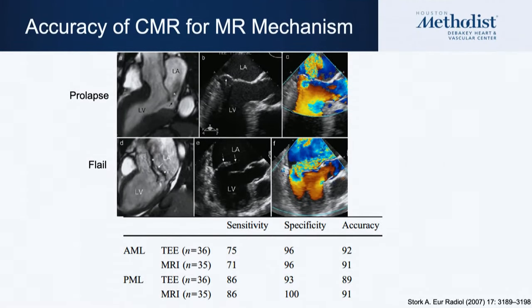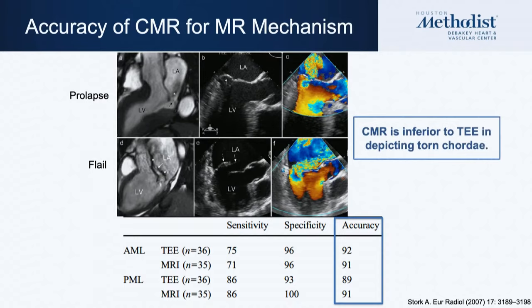Comparative studies show that CMR accuracy for MR mechanism is high compared to TEE when surgery is the gold standard — typically 90% or more. However, CMR fails compared to TEE in showing a torn cord because MRI is a multi-beat acquisition over 8–10 beats, so irregular motion is not well captured. Vegetations are another example of structures not well seen on CMR.